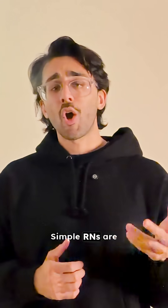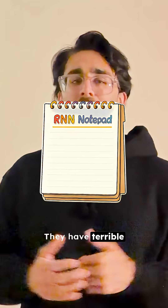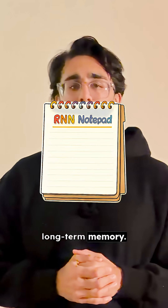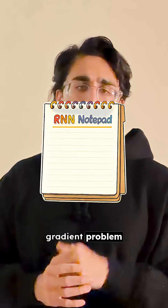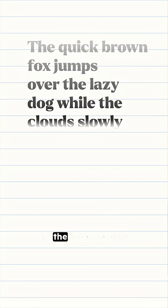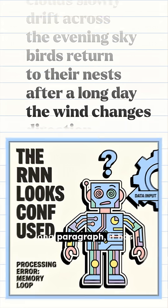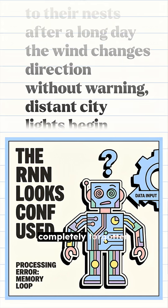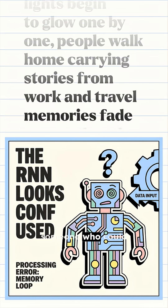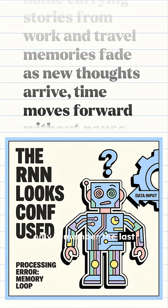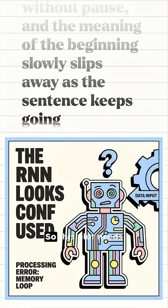But this story has a problem. Simple RNNs are, well, simple. They have terrible long-term memory. It's the vanishing gradient problem all over again. By the time the RNN gets to the end of a long paragraph, it has completely forgotten the beginning. It's like talking to someone who could only remember the last three words of what you said. It's brutal.